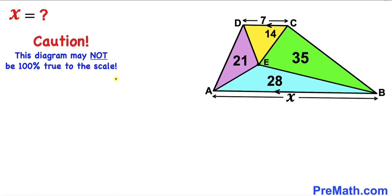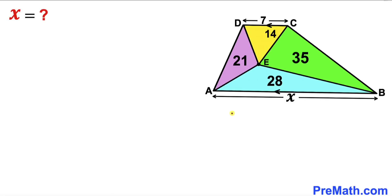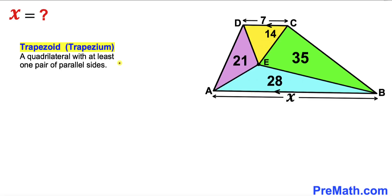Please keep in mind that this figure may not be 100% true to scale. Let's get started. Let's recall the definition of the trapezoid — it is also called a trapezium, a quadrilateral with at least one pair of parallel sides.